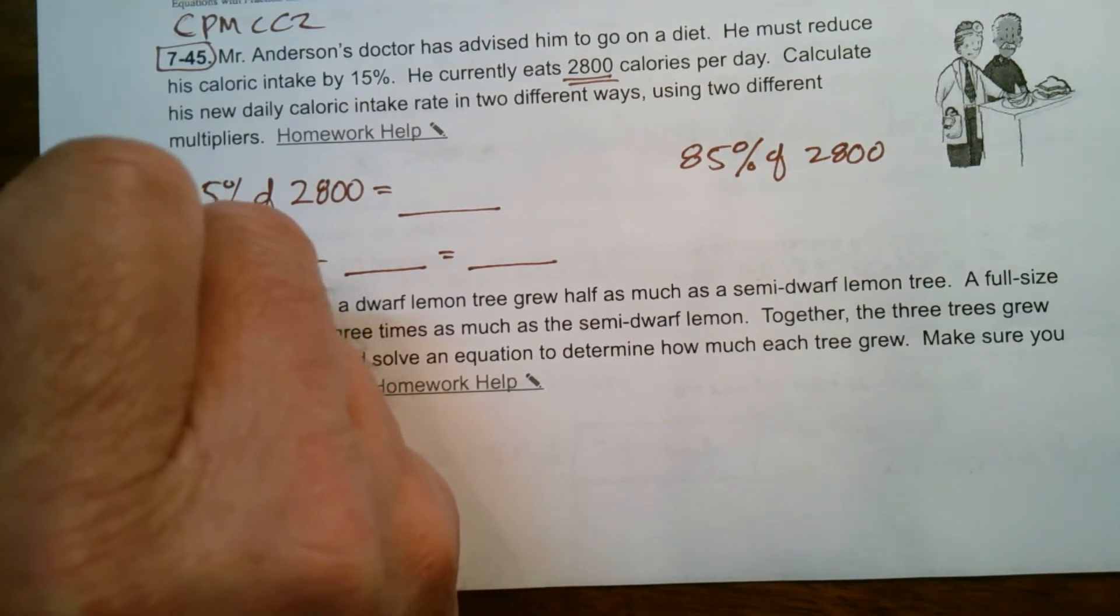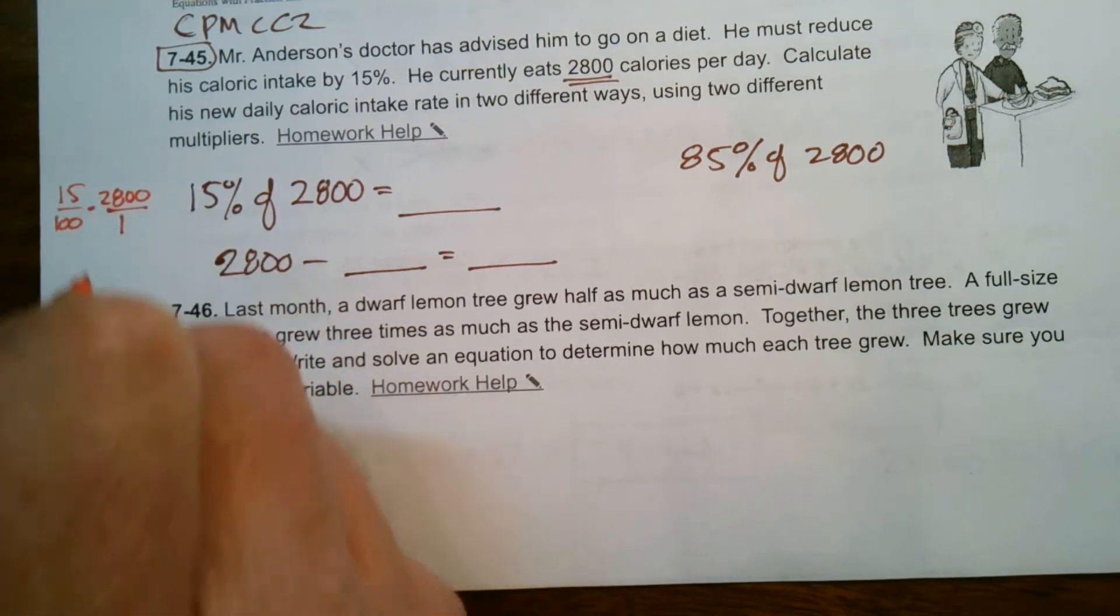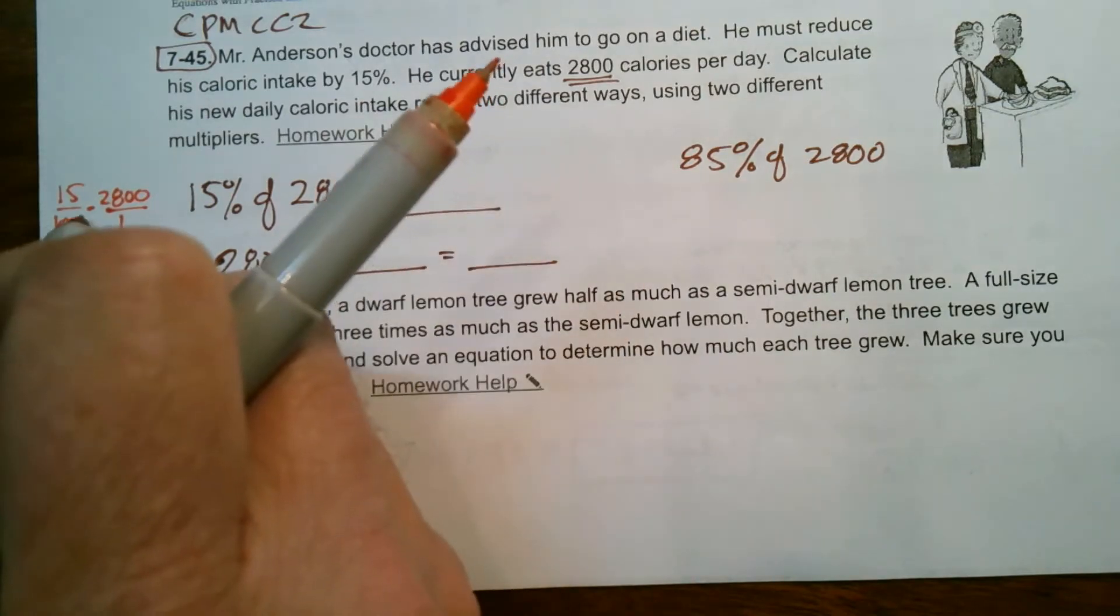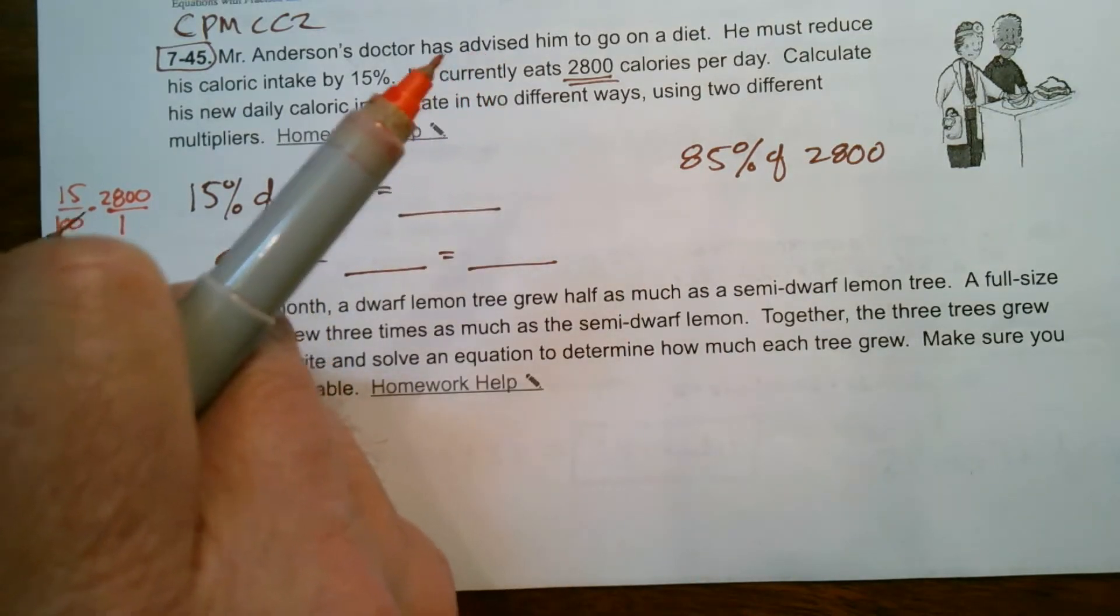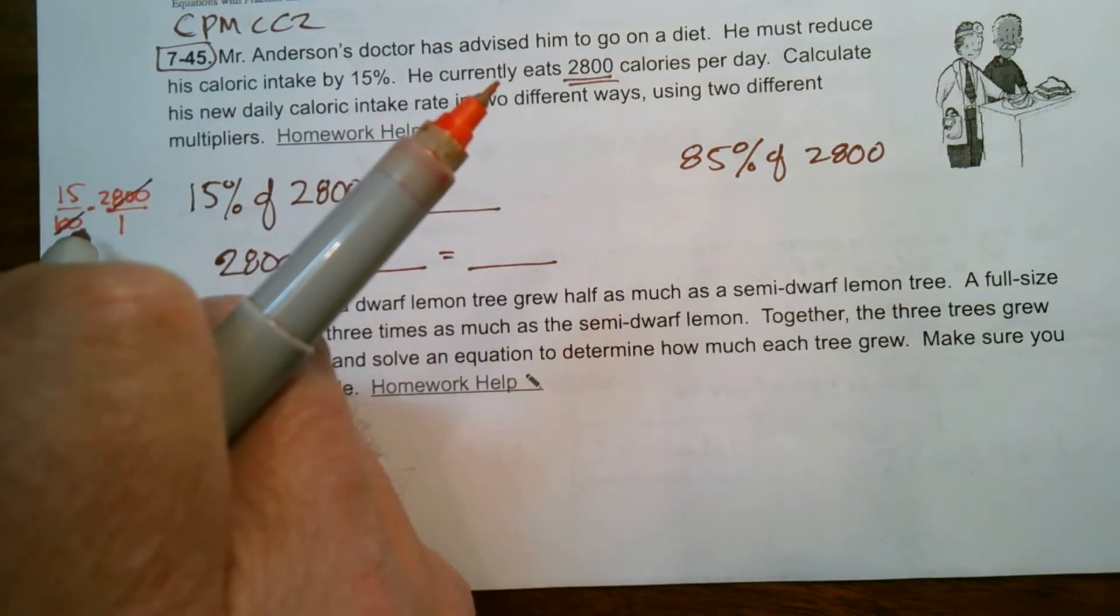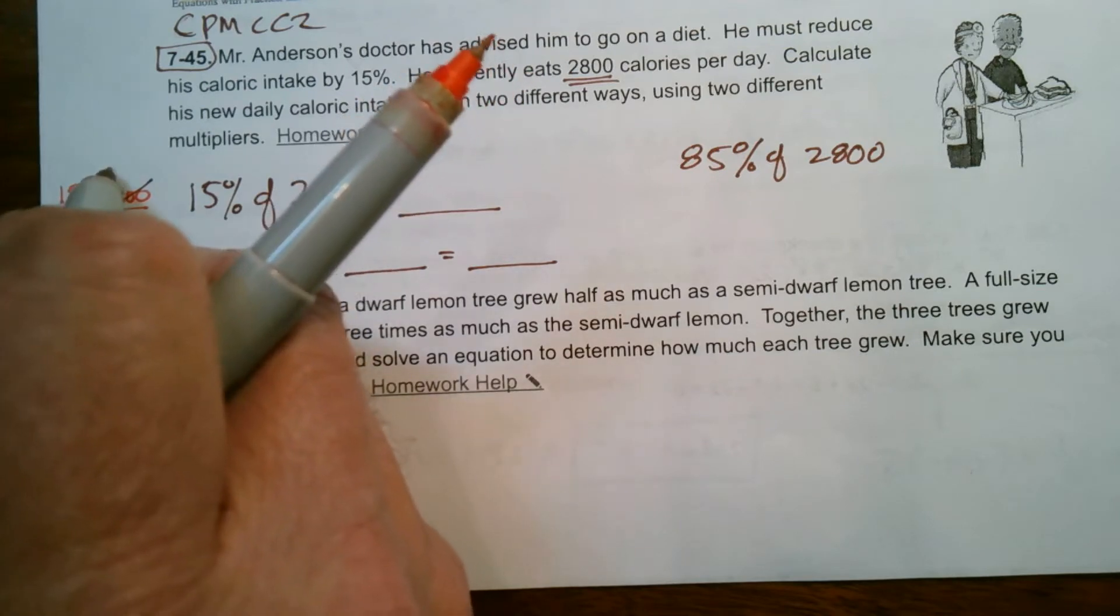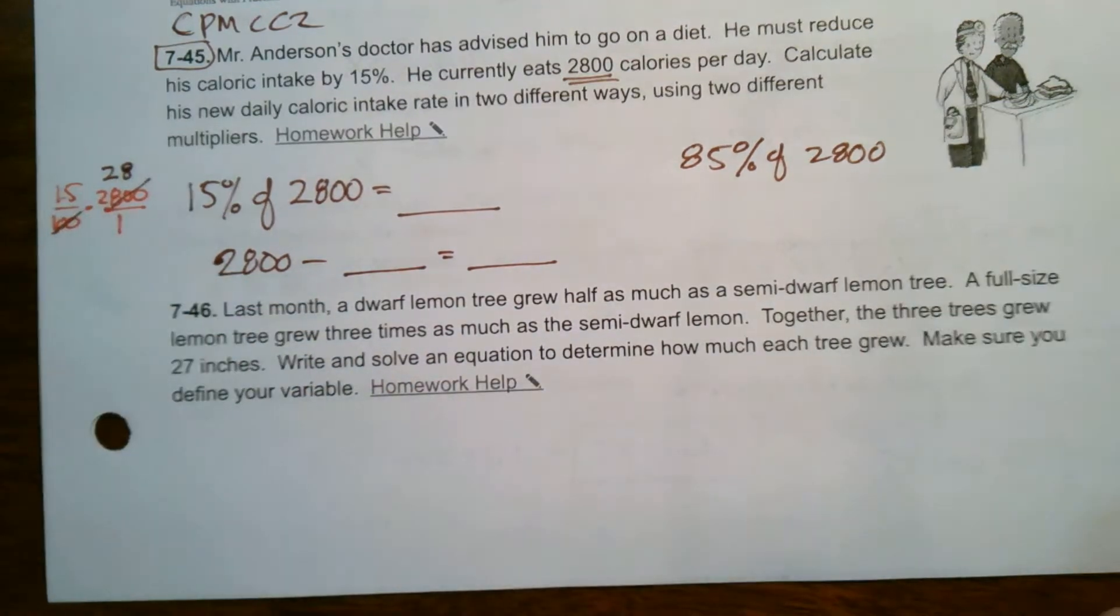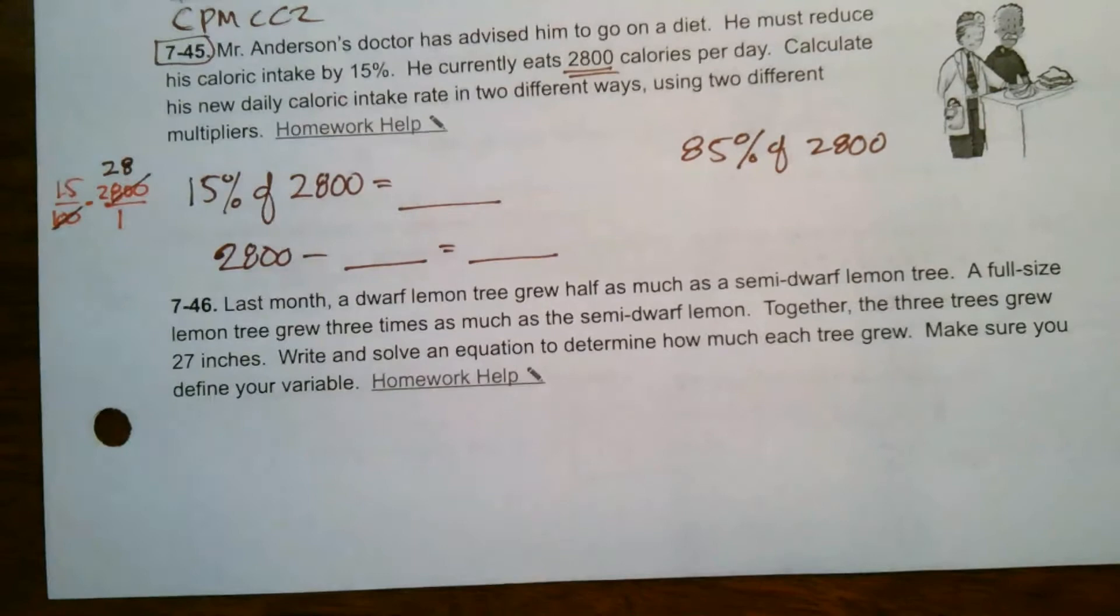And when you do that, you put the 2,800 over 1. And then what's nice here is if you notice this, that this 100 and 2,800 can simplify because 100 goes into 2,800 28 times. So I can cross-simplify before I multiply. So really all I got to do is take 15 times 28.